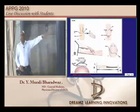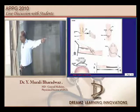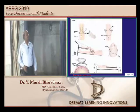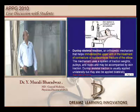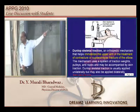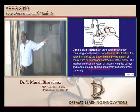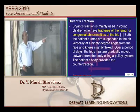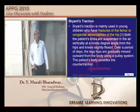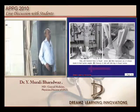This is an example of a Buck's extension traction — by appearance alone we can call it a skin traction. This is an example of a Dunlop skeletal traction. This is an example of a Dunlop skin traction. And this is Bryant's traction, which is once more a skin traction. These are all the various types to remember.